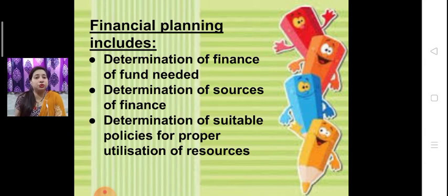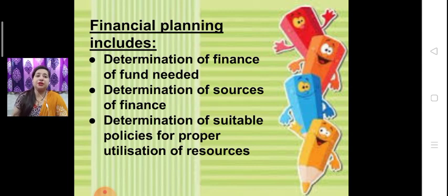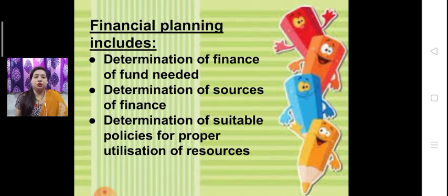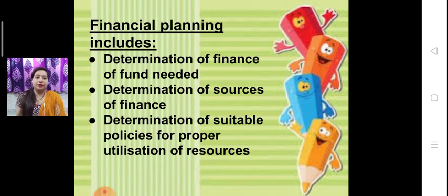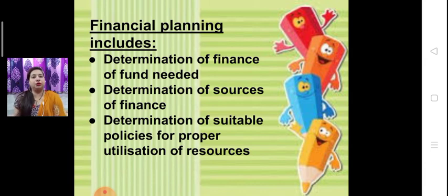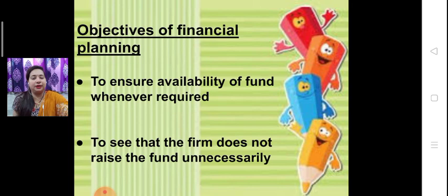Next one is determination of suitable policies for proper utilization of resources. The next step is to determine what are the perfect and efficient policies which are useful for proper utilization of resources and which reduce the wastage of money. So financial planning includes determination of finance for the firm, determination of sources from where we acquire money, and determination of suitable policies for better utilization of resources.